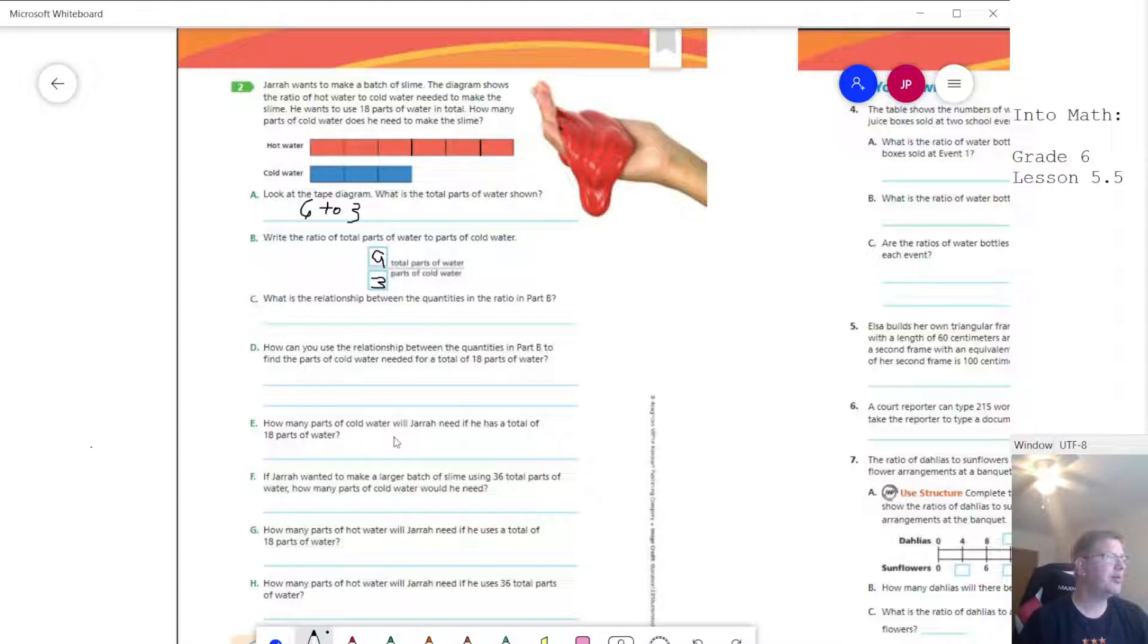How many parts of cold water? If we have 18, we would need six parts. Then we can use what we worked on in the last lesson to double this amount to get up to 18 total parts. If we wanted 36 total parts, we could multiply by four to get 36. And then that would give us the amount of parts of cold water, which would be 12.